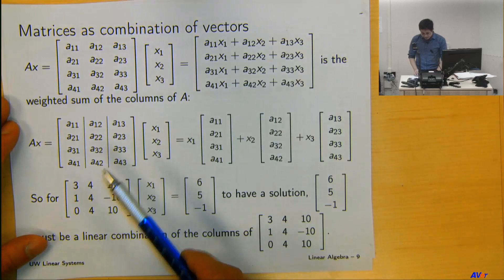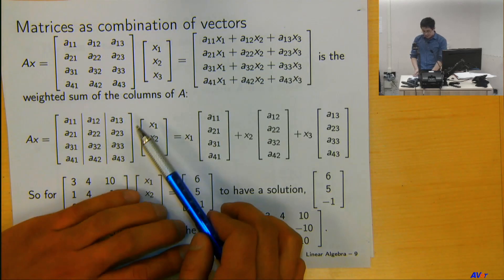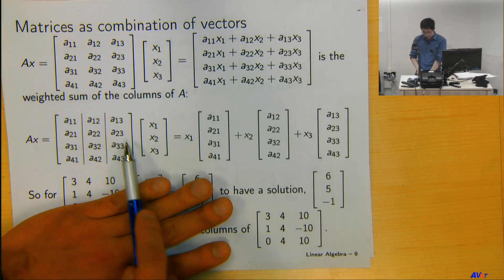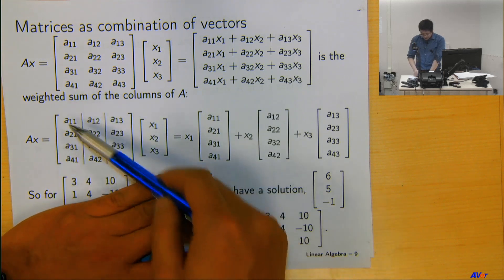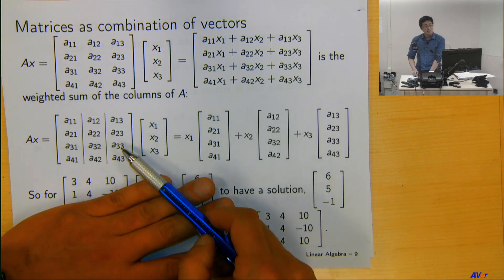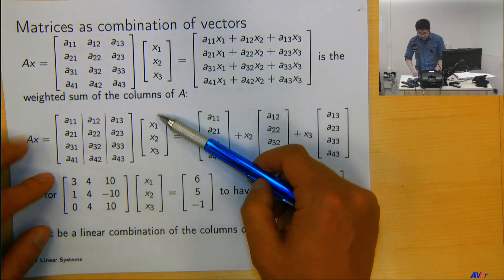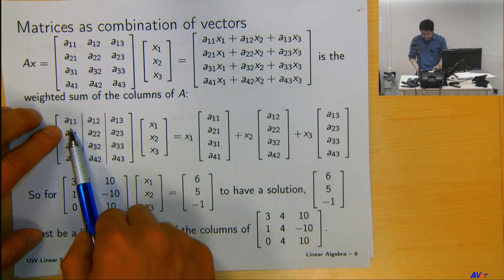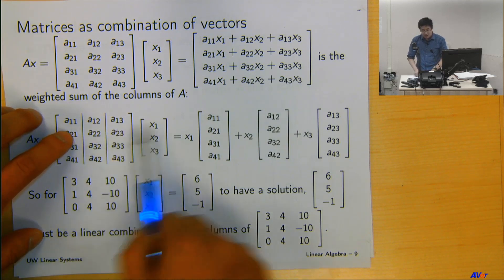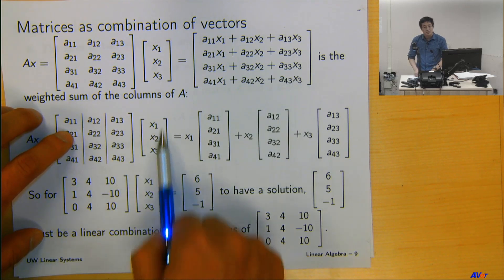Now, what we usually do is to regard this computation as the following. If you think about this matrix, it has three columns. Think about each column as an individual, as a unit. Then it's like three elements here multiplying three elements here.